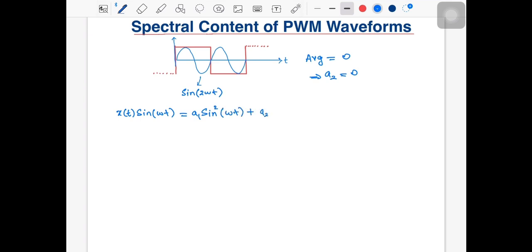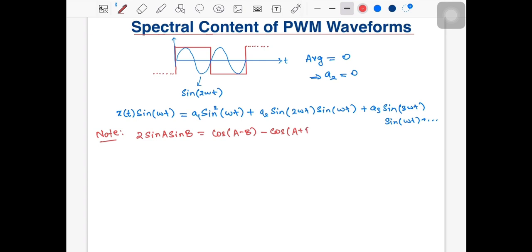Suppose that we multiply x(t) with sin(ωt), and then compute the average. What we have is that the product can be expressed as a₁sin²(ωt) + a₂sin(2ωt)sin(ωt) + a₃sin(3ωt)sin(ωt) and so on. Now, two trigonometric properties that can simplify algebra is that 2sin(a)sin(b) = cos(a-b) - cos(a+b), and the other is 2sin²(a) = 1 - cos(2a).